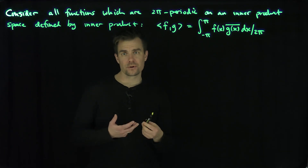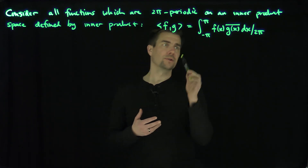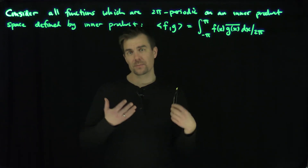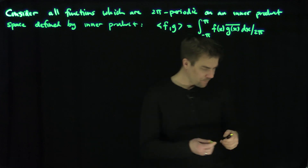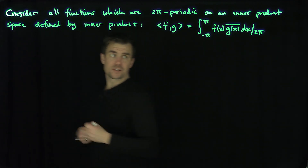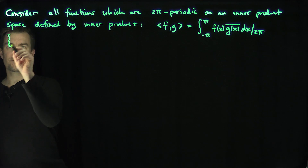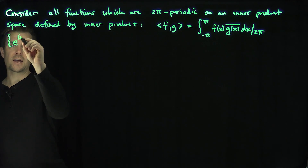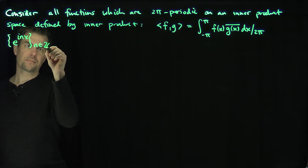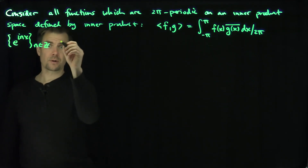If I consider all functions which are in L², L² functions with respect to the Lebesgue measure, then this becomes a complete inner product space. We've seen in a previous video that if we consider the exponential family — the family of functions e^(inx) for n in ℤ — then these functions are orthogonal with respect to this inner product.